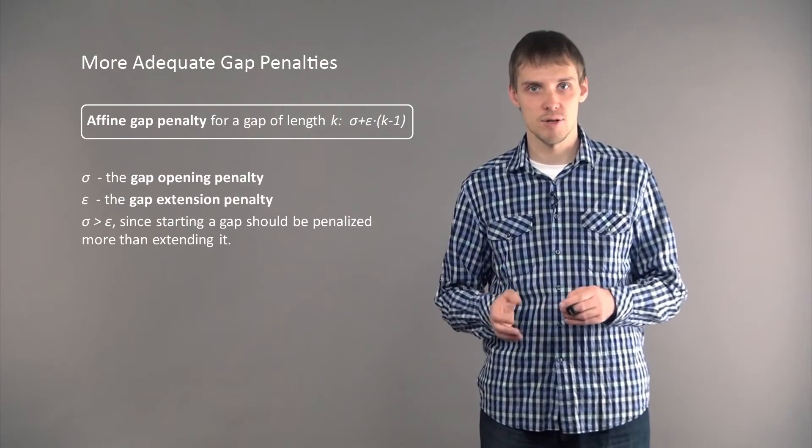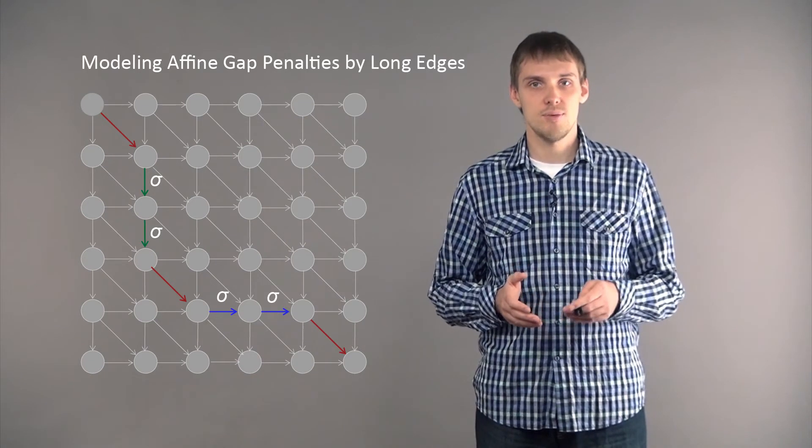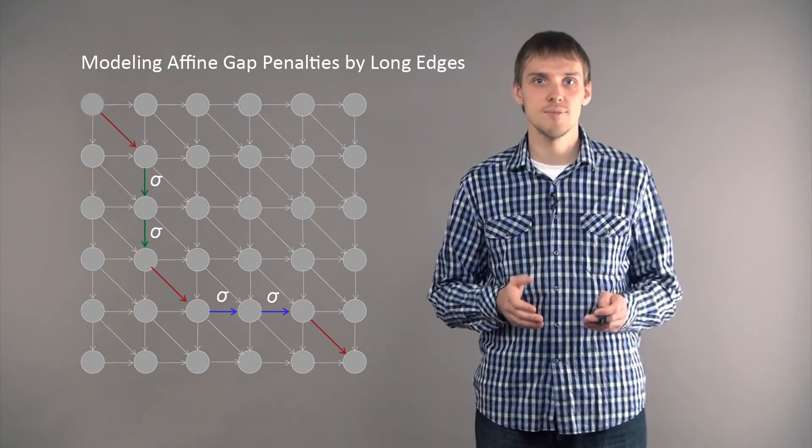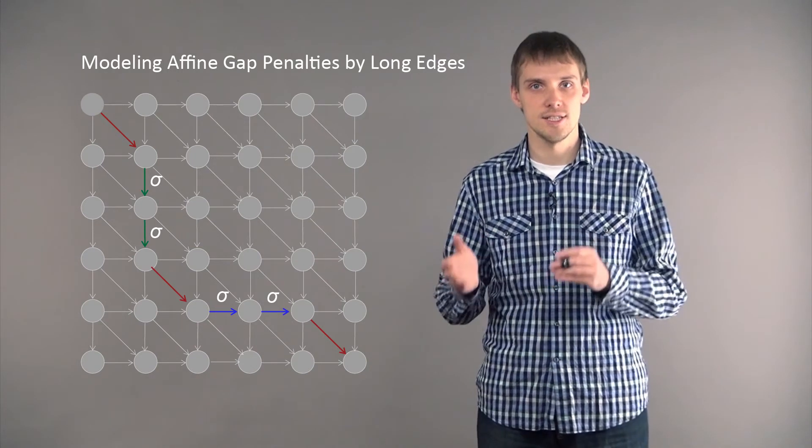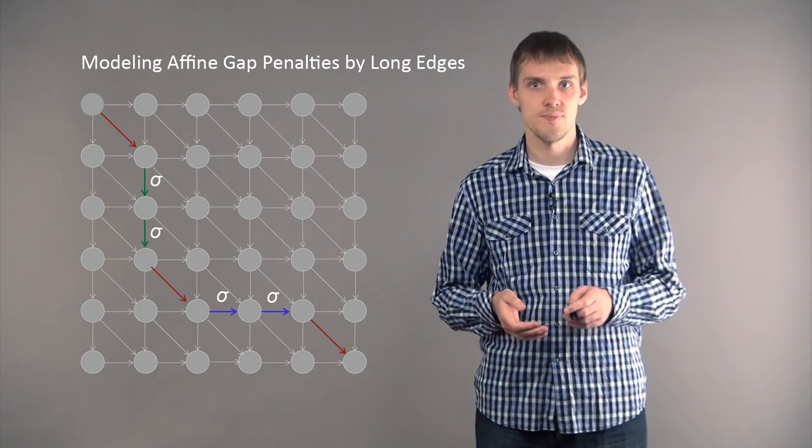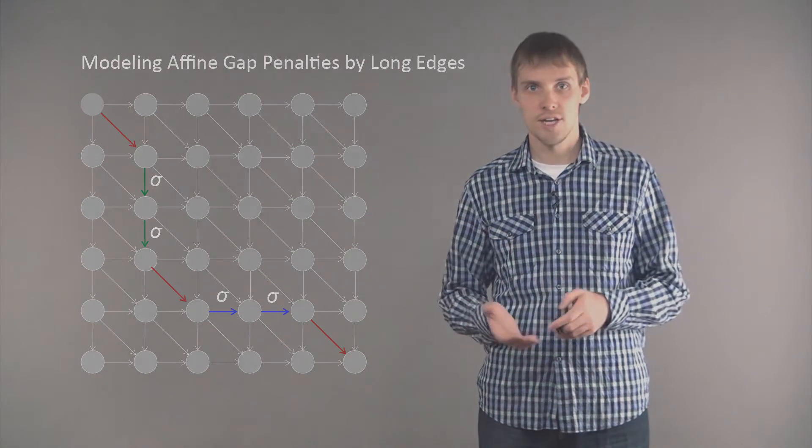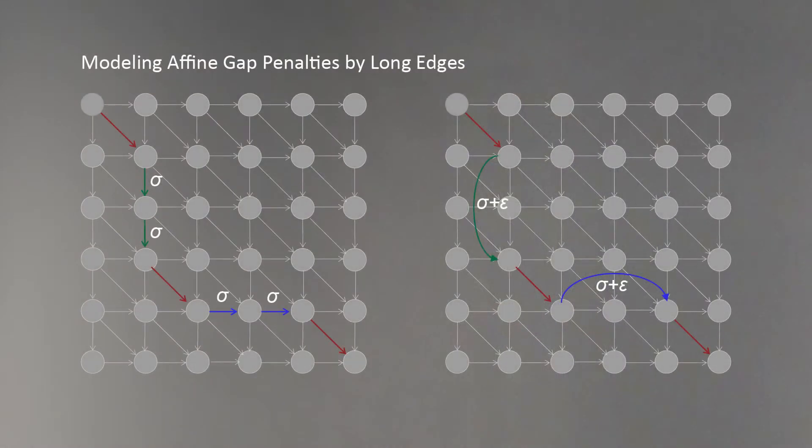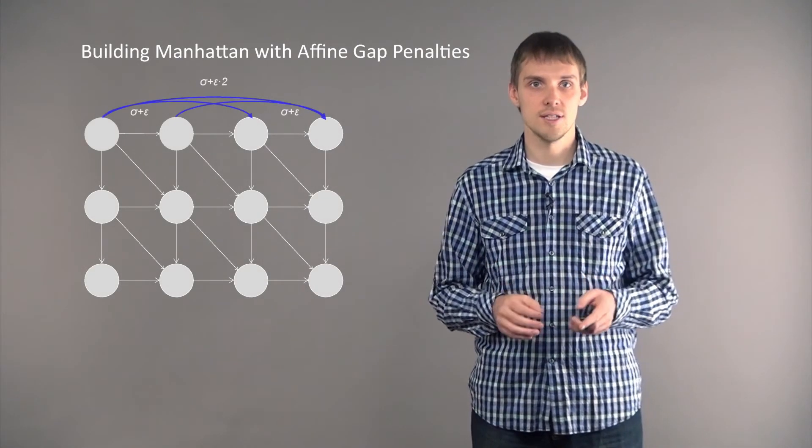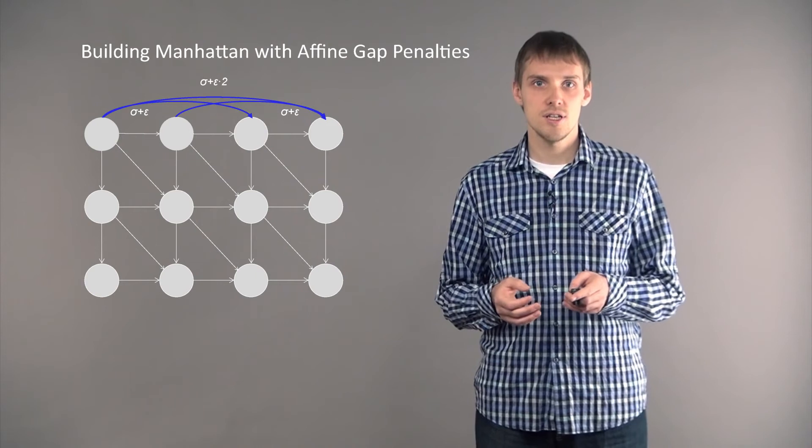Previously, we had single edges with weight sigma to represent insertions and deletions. These edges were horizontal and vertical edges in our Manhattan grid. Now we can add more edges - for example, we can add an edge of weight sigma plus epsilon which will represent a single gap of length 2.